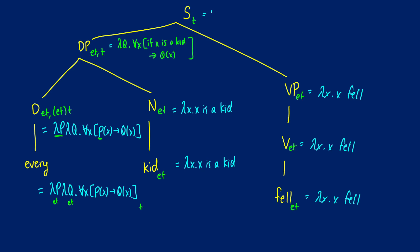When we do that substitution, we get: this is true if and only if for all X in the domain of entities, if X is a kid, then X fell. And that's our final result for this sentence. A lot of the difficulty with these initial quantifiers is motivating the types. Starting with a predicate logic translation and working backwards should help give more insight here.